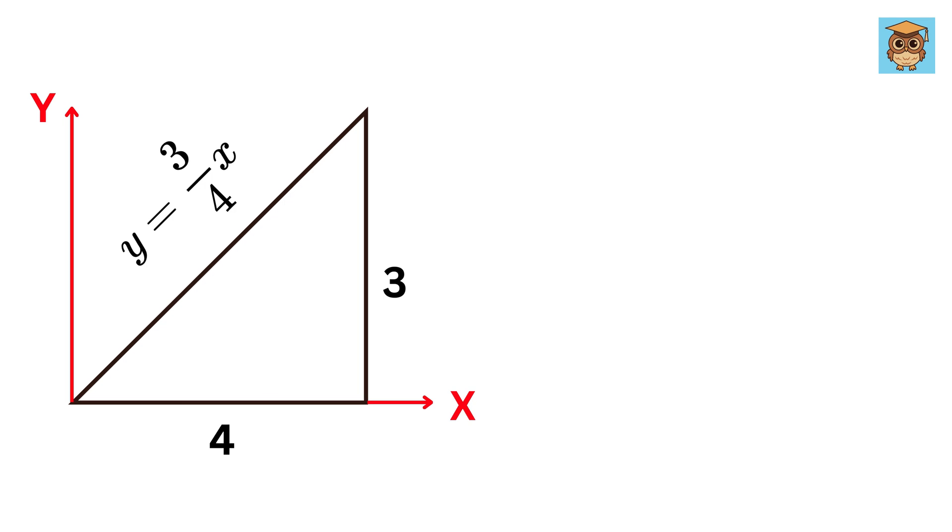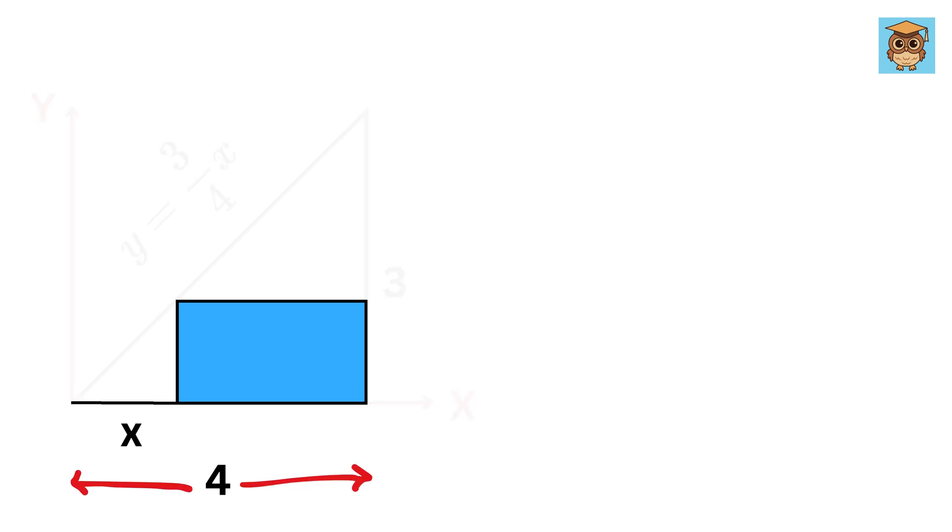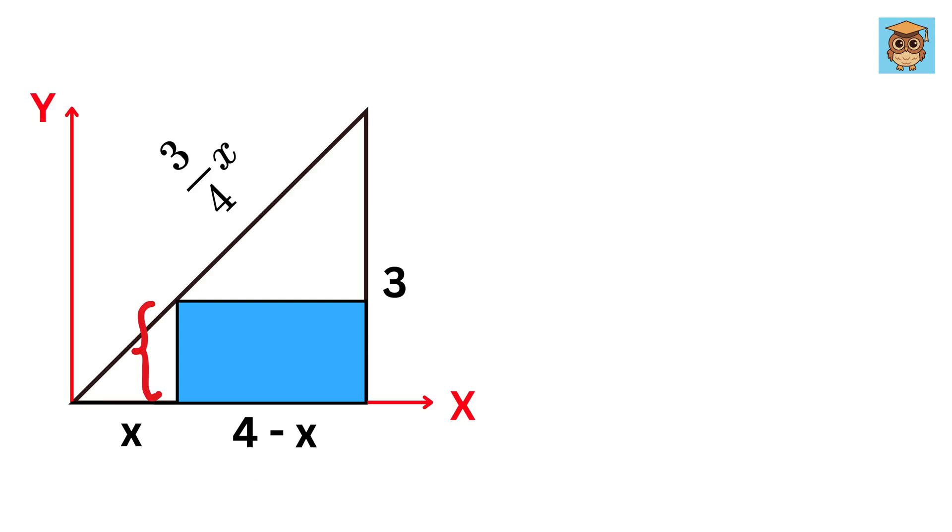Now, let this vertex of the rectangle be located at a distance x from origin. This is 4, so therefore this will be 4 minus x. Also, the width of this rectangle will be 3 over 4 times x.